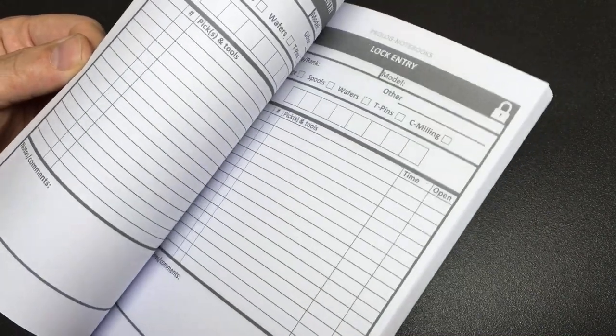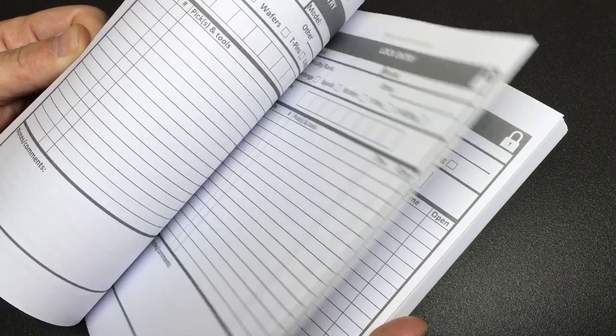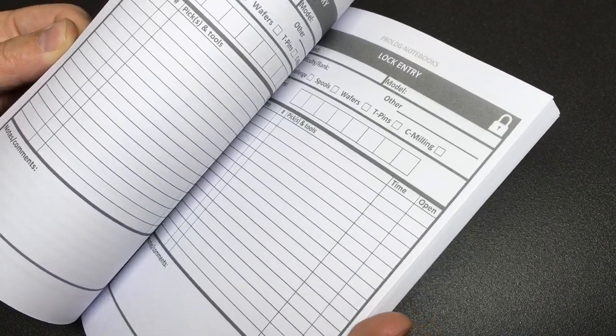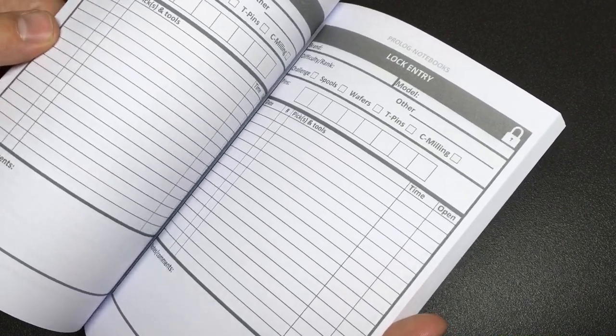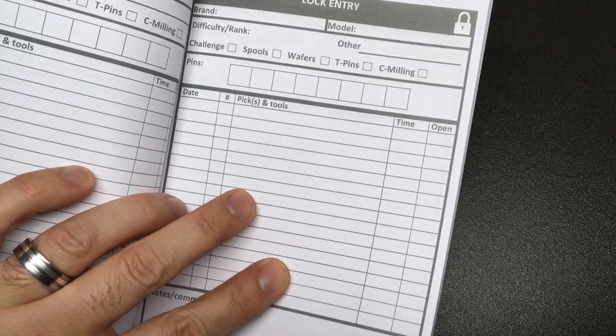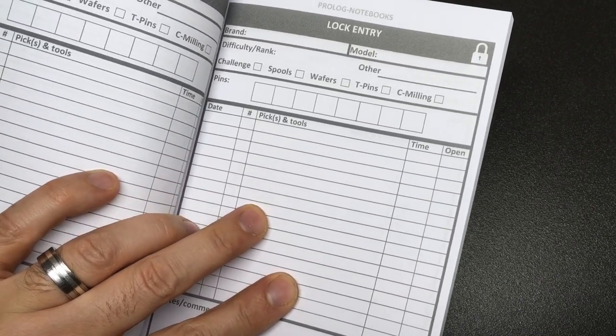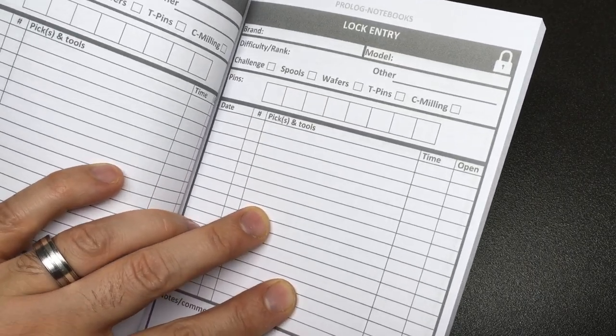Now I do know some people who keep spreadsheets of this kind of thing and other people who keep notes themselves, but I actually quite like the idea of this. I'm quite a pen and paper kind of person myself, and I think when I first started picking in particular I would have found this quite useful. It's also quite useful for those people who just like to keep a record of what they've been doing in their lock sport hobby.